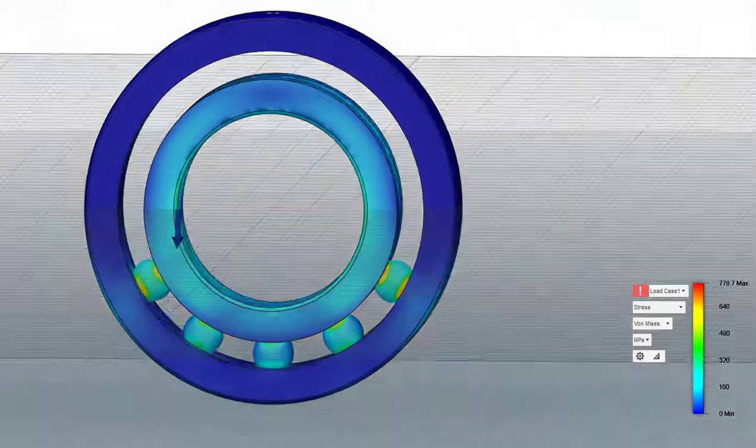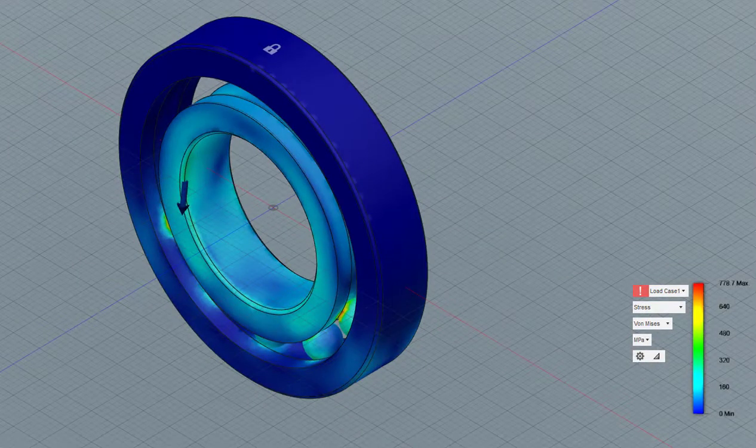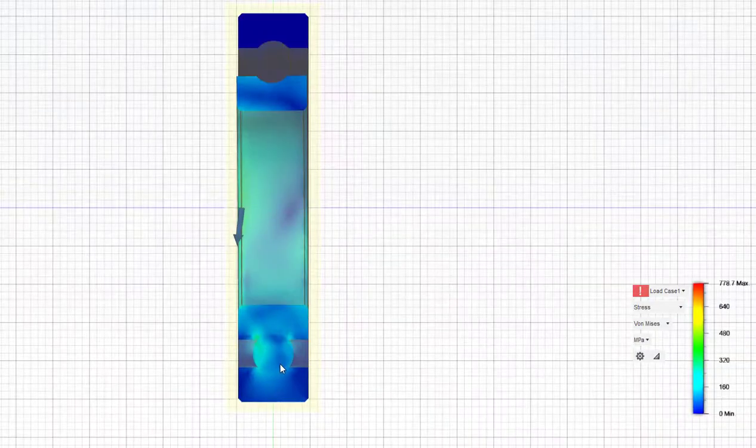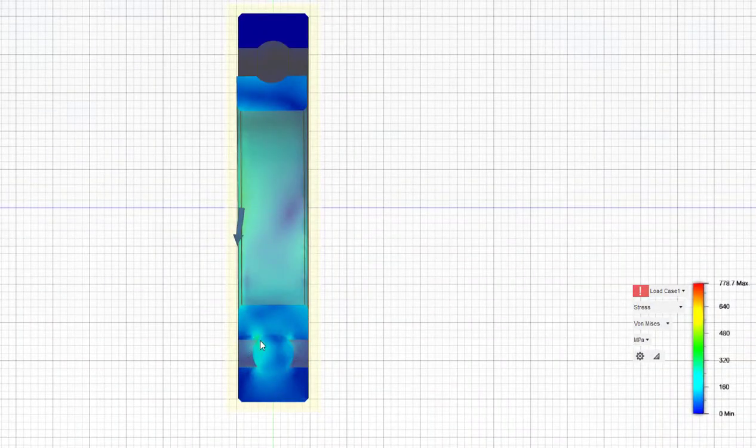So if I go back to this view and then I open a slice plane and then look at the front of it, you'll see where we have contact. We have that the ball is embedded in the groove of the outer race and the groove of the inner race.